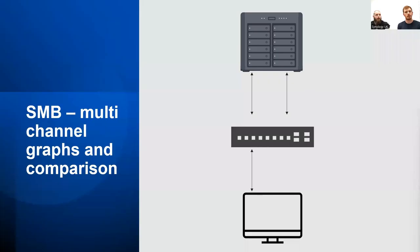Another new feature in 7.2 is improved SMB multi-channel support. If you have multiple connections between the NAS and the switch, and between the switch and end-user devices, data can be split across multiple channels. This does two things: firstly it increases throughput by allowing more data to be pushed simultaneously, and secondly it improves security by splitting communication across multiple lines so that any interceptor on one line won't get the complete information. In testing, we achieved a 290% performance increase in writing files over SMB multi-channel.